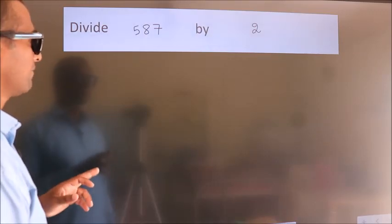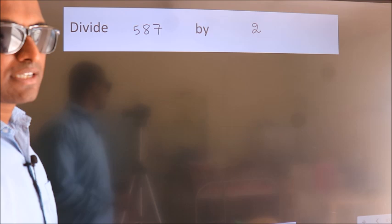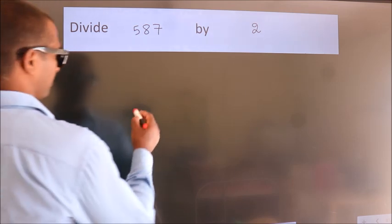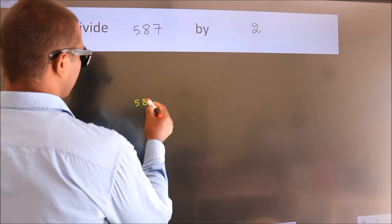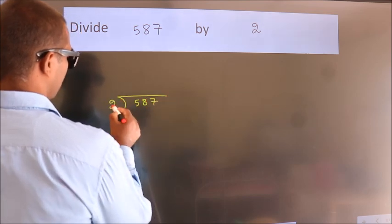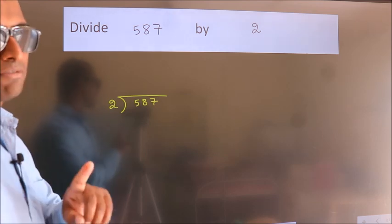Divide 587 by 2. To do this division, we should frame it in this way. 587 here, 2 here. This is your step 1.